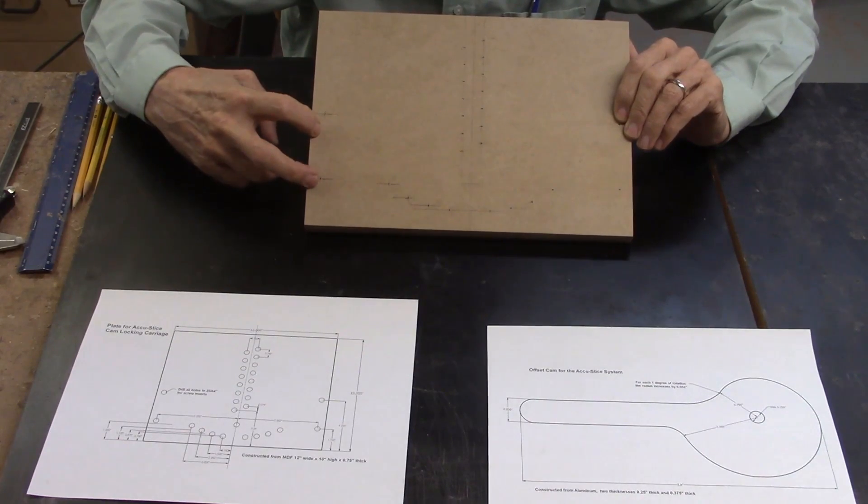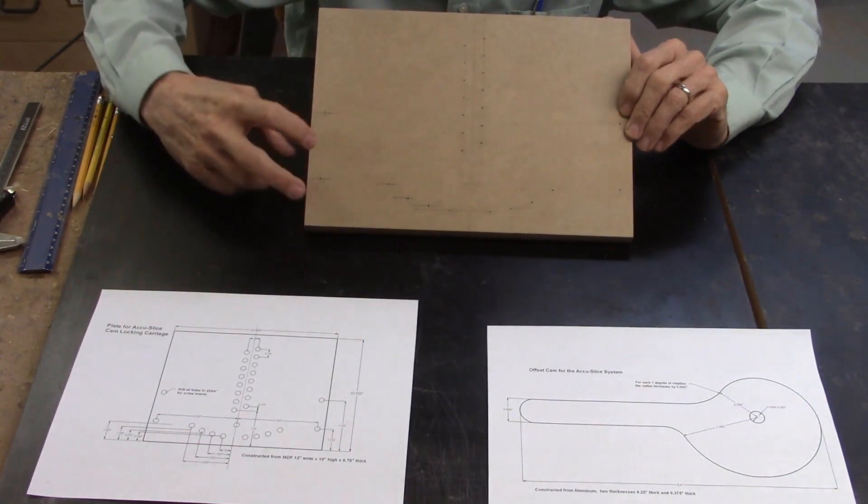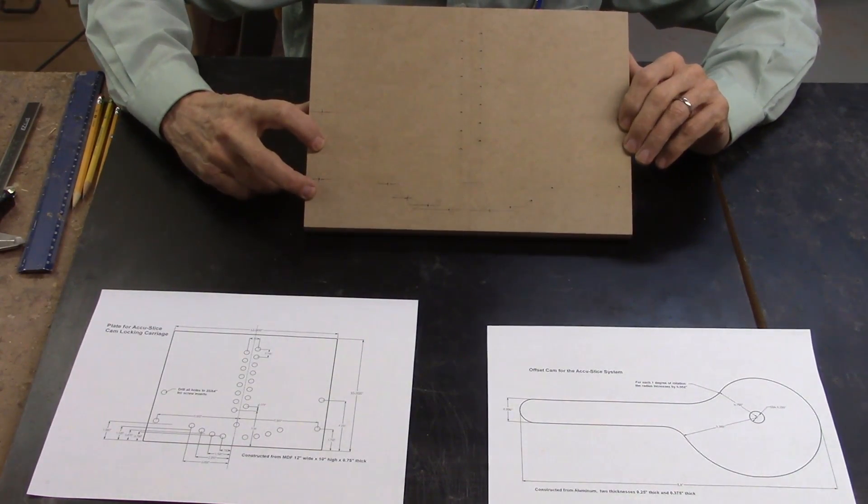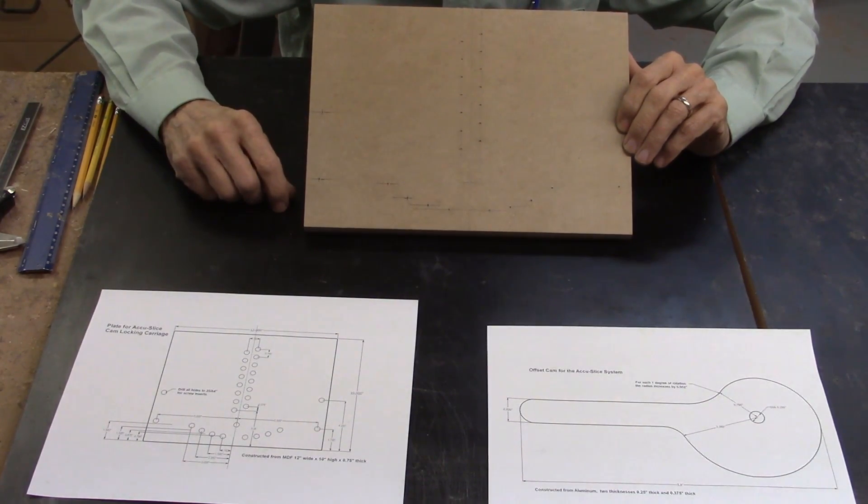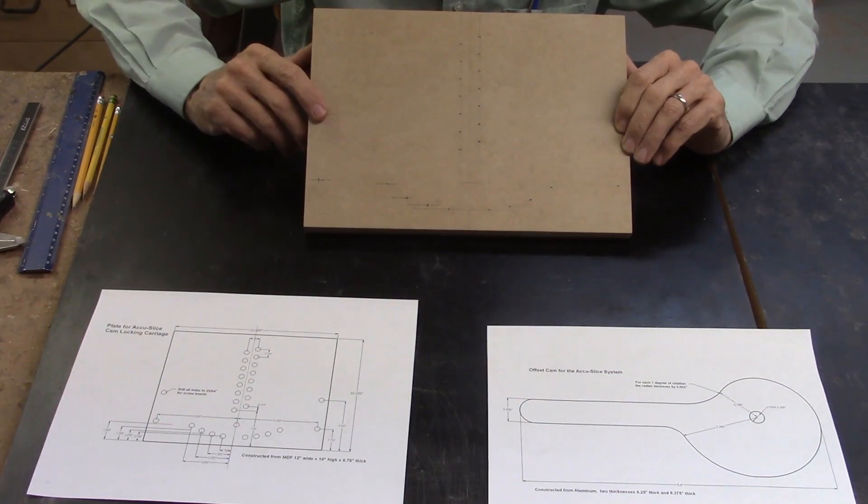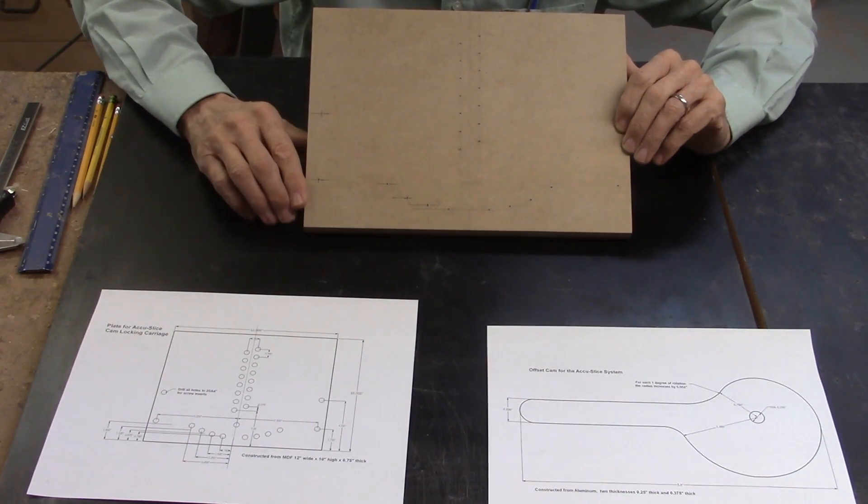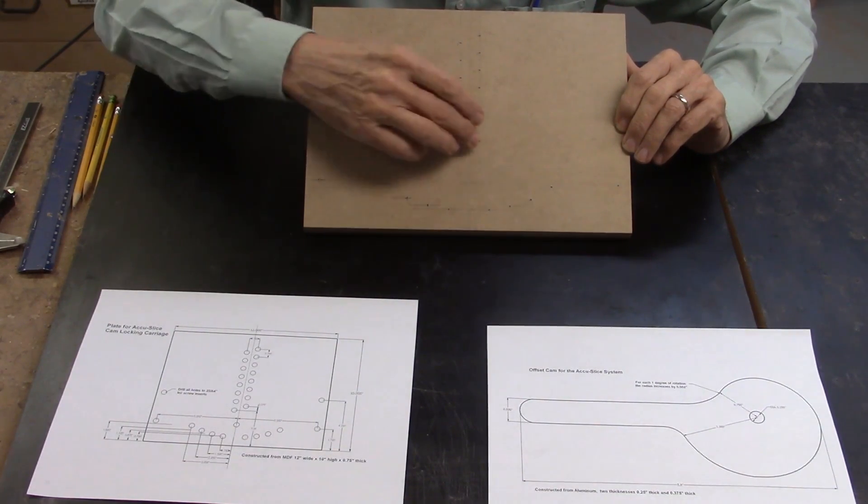I also am going to be putting additional holes here to mount this on my carriage on the Accu-Slice using the quick change clamps. So now that these are all marked and ready to go, I can take this over to the drill press and start drilling my holes.